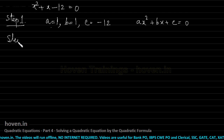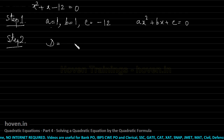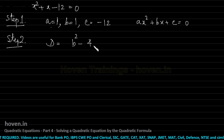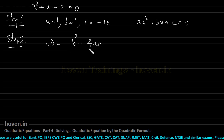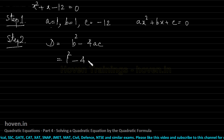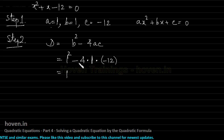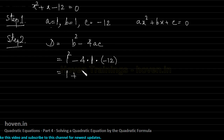Step 2: find the discriminant d = b² - 4ac. Substituting: d = 1² - 4(1)(-12) = 1 + 48 = 49. The minus times minus becomes plus, so 4 × 12 = 48, and 1 + 48 = 49.